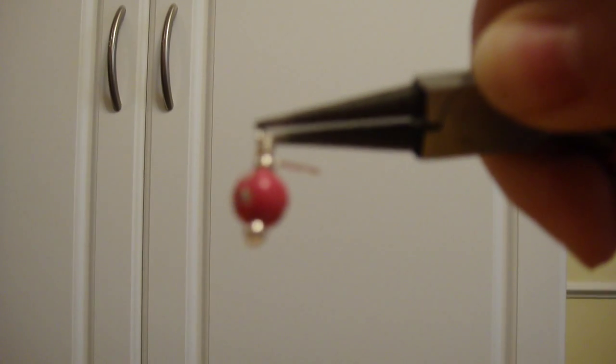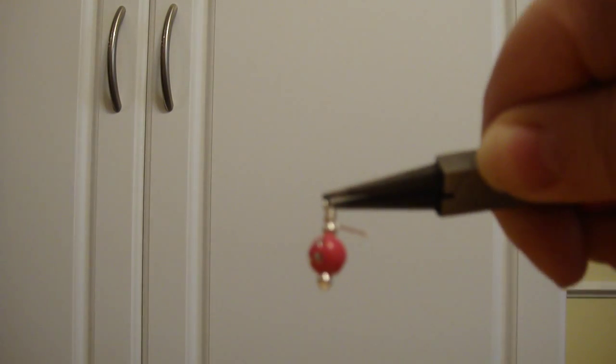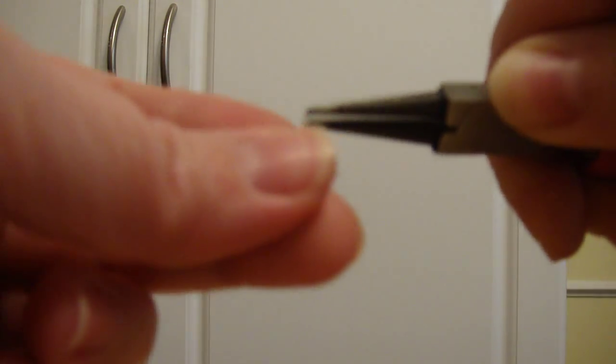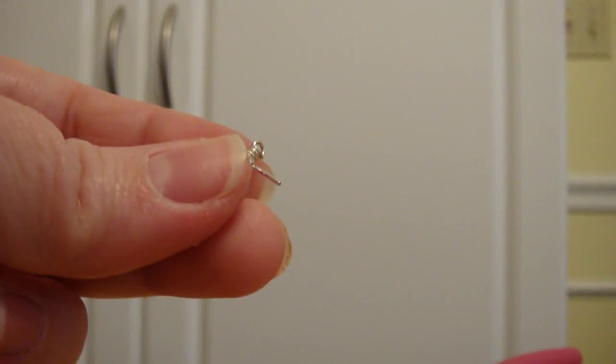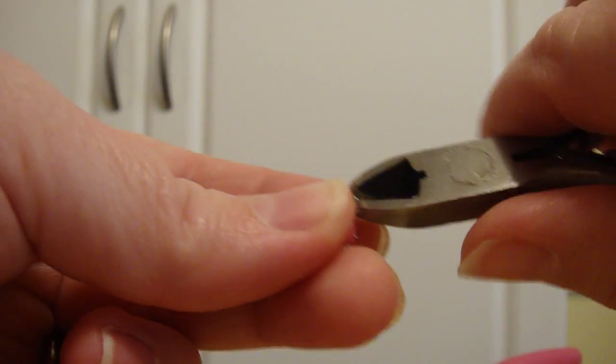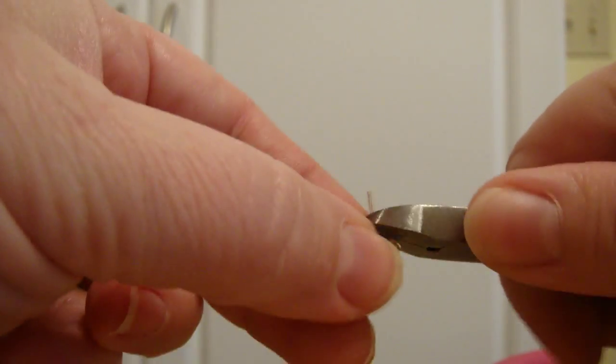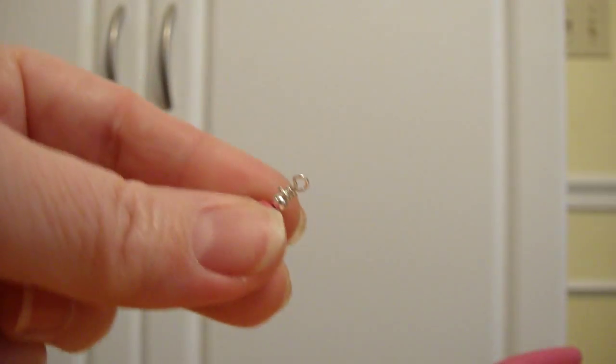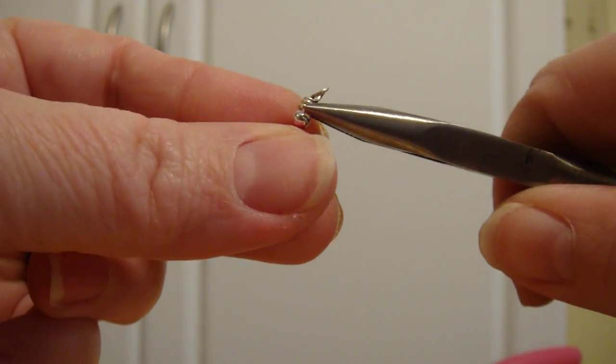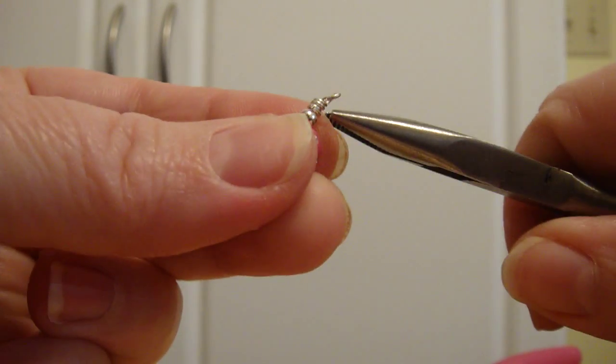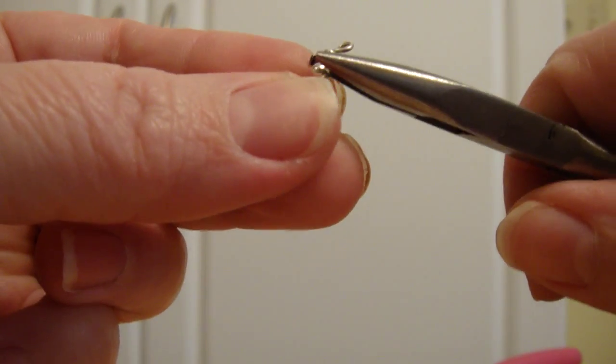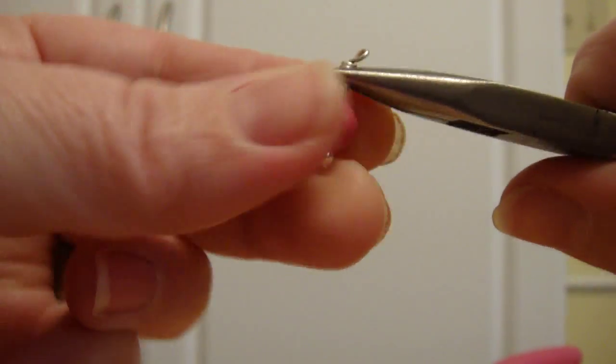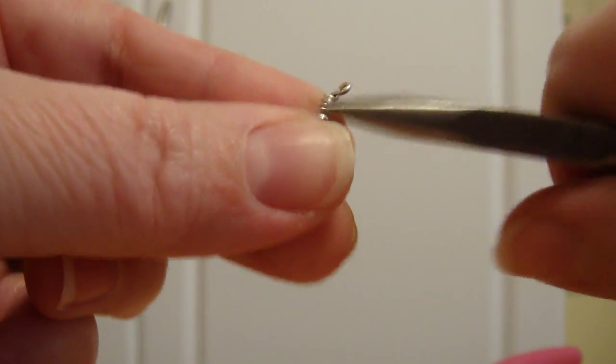Then what I'm going to do is just clip this extra off with my cutters. Then I'm going to take my little flat nose pliers and just crimp that down, push the end down so it's not sticking out.